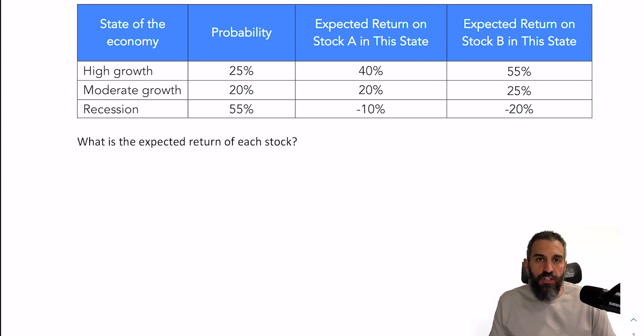So here you're given a situation where you've got two stocks, stocks A and B, three different possible states in the economy: high growth, moderate growth, and recession. You're given the probabilities for each one and what the expected returns for the stocks are in each of those states.